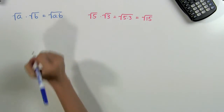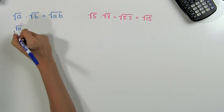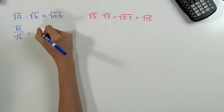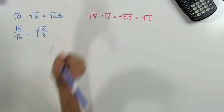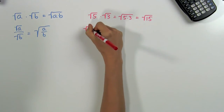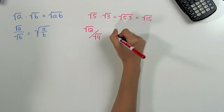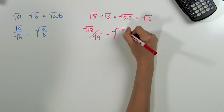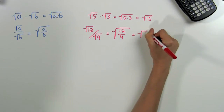The second property is similar and it states that the square root of a divided by the square root of b is equal to the square root of a divided by b. For example, this means that the square root of 12 divided by the square root of 4 is equal to the square root of 12 divided by 4, or the square root of 3.